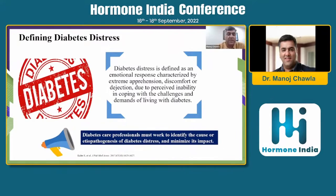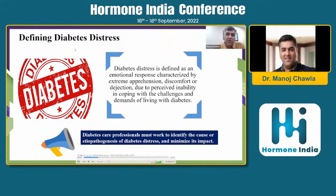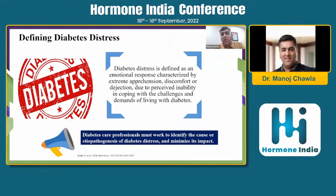How do we really define diabetes distress? Diabetes distress is defined as an emotional response characterized by extreme apprehension, discomfort, or dejection due to a perceived inability to cope with the challenges and demands of living with diabetes. You will hear different words and expressions from people with diabetes — it's not really depression or a major depressive disorder, but it is the burden of living with diabetes: the diet, the monitoring, the medications and all of that.